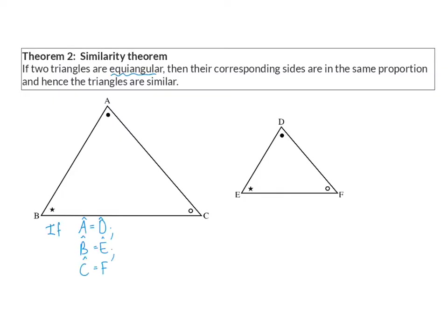Equiangular triangles means that we know that angle A is equal to angle D, angle B is equal to angle E, and we know that angle C is equal to angle F.